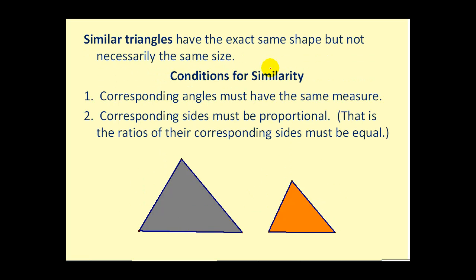Similar triangles have the exact same shape, but not necessarily the same size. The conditions for similarity are: number one, corresponding angles must have the same measure — this angle is congruent to this angle, those are congruent, and those are congruent. But corresponding sides are proportional, which means the ratios of the corresponding sides are equal.